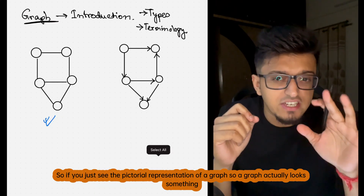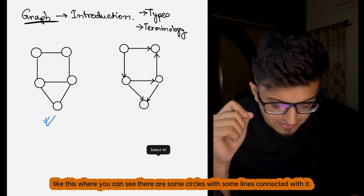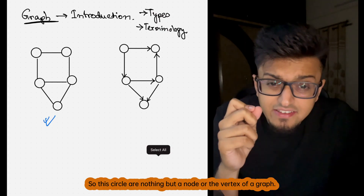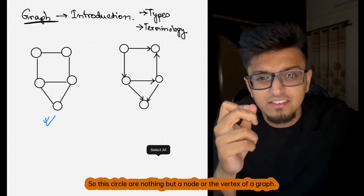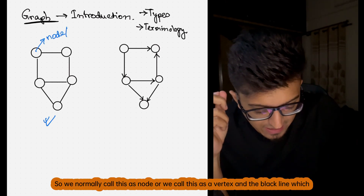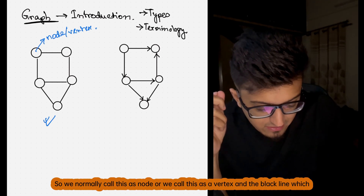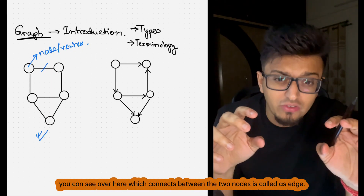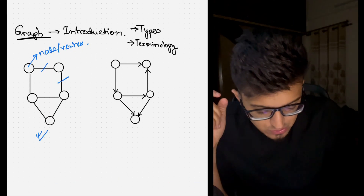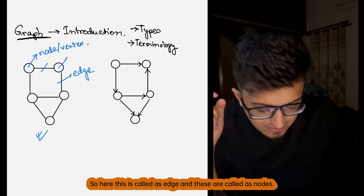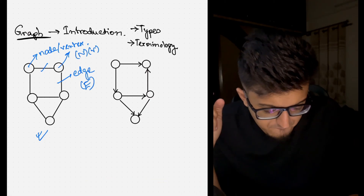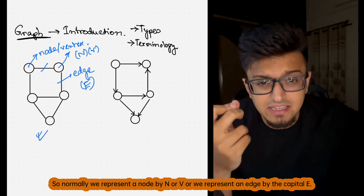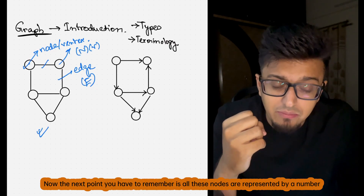Let's first understand how a graph actually looks like. Looking at the pictorial representation of a graph, you can see there are some circles with some lines connected to them. These circles are nothing but a node or a vertex of a graph — we normally call this as a node or a vertex. The black line which connects between two nodes is called an edge. We normally represent a node by N or V, and an edge by the capital E.